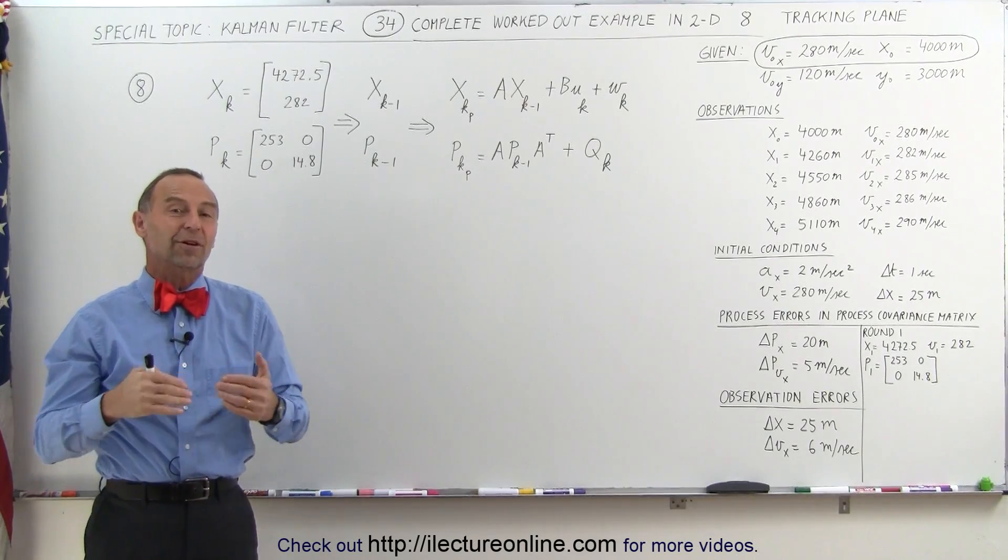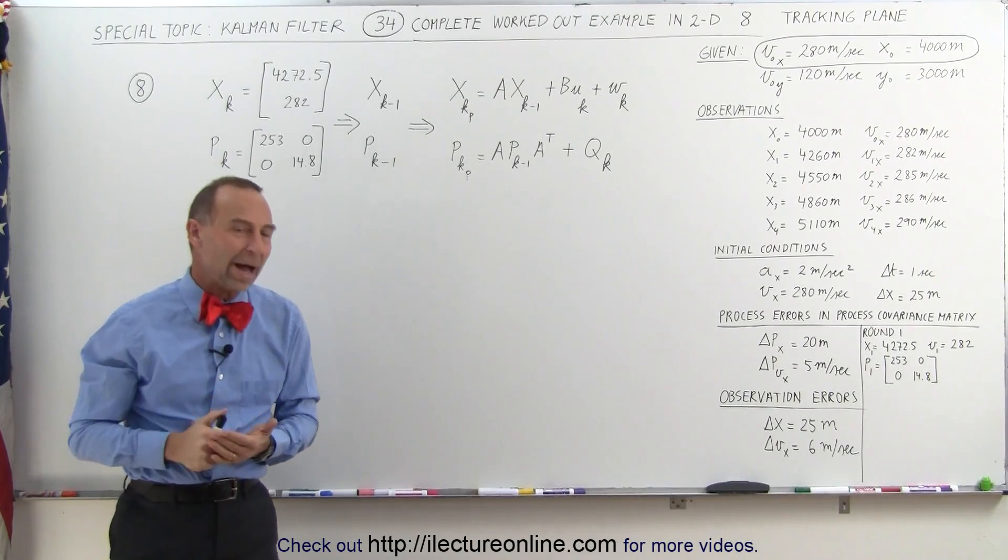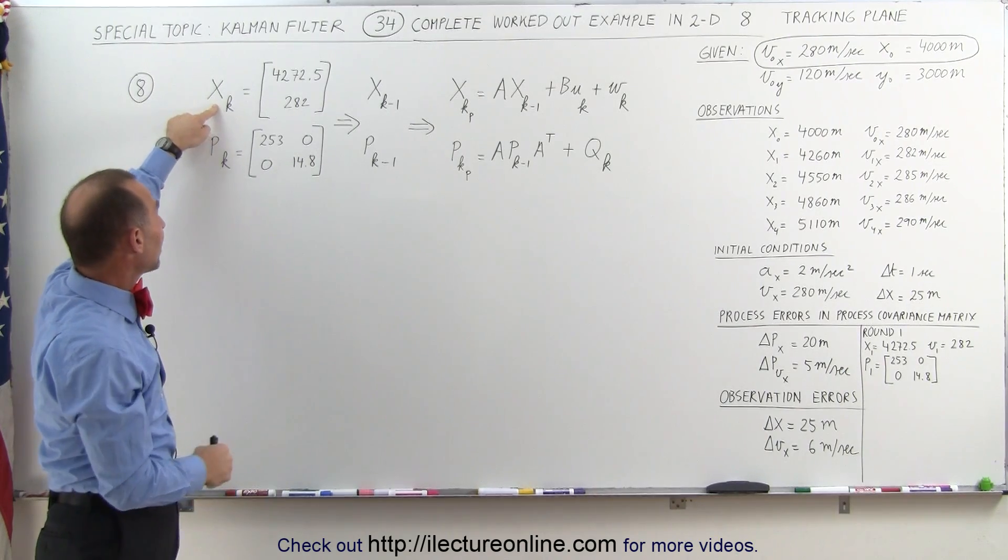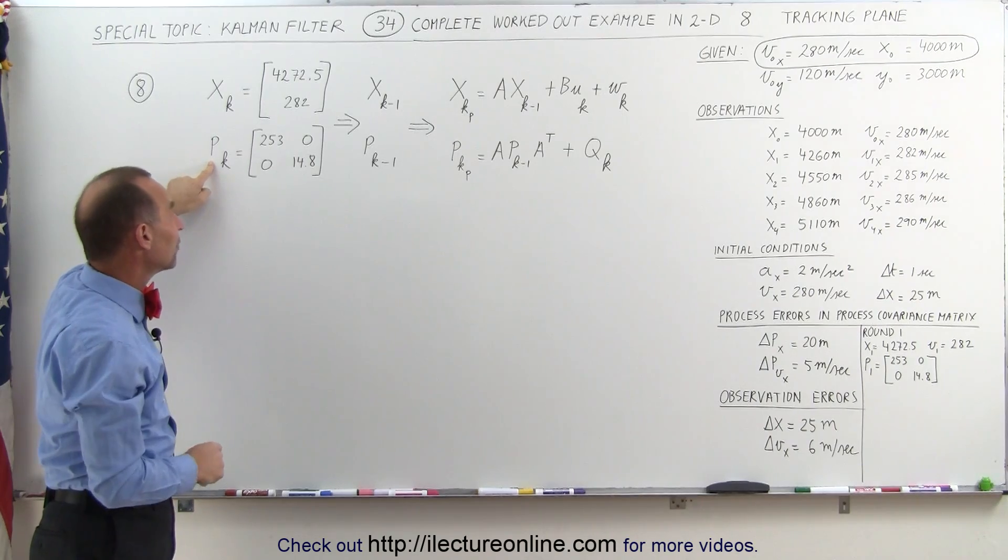Welcome to ElectronLine. Now we've reached our final step of the first round in the Kalman filter process. We have now determined the new state matrix and the new process covariance matrix.